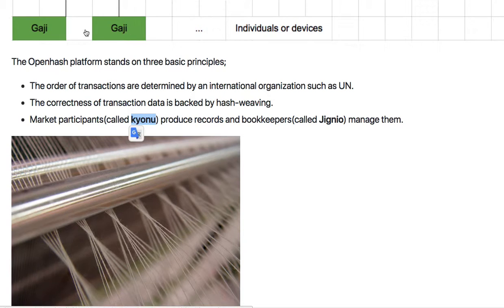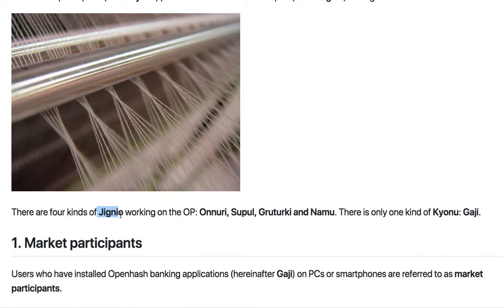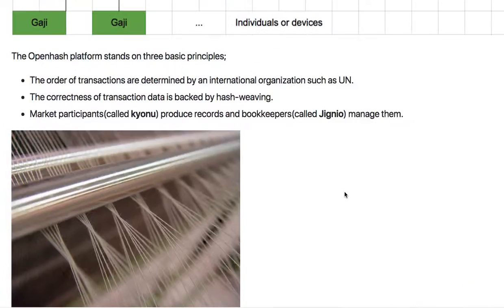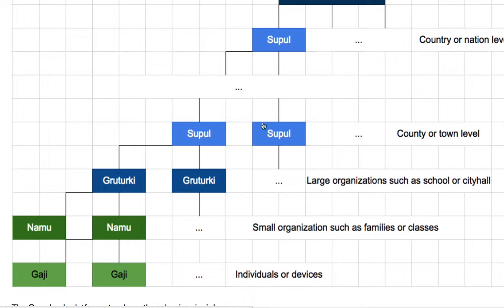Market participants are called Gyanu, and each Gazi represents one Gyanu. They produce records — transaction data. Bookkeepers are called Zignya, and Zignya manage and weave that transaction data. There are four kinds of Zignya working on the Opnash platform: Onuri, Suphul, Grutegi, and Namu. There is only one kind of Gyanu — Gazi. So let's see how Namu and Grutegi work for weaving transaction data.